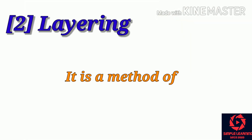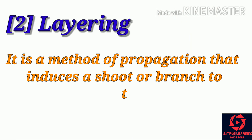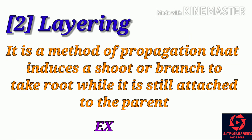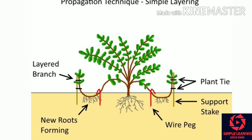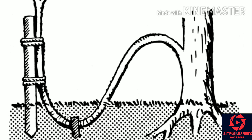Second, layering. It is a method of propagation that induces a shoot or branch to take root while it is still attached to the parent plant. Plants like mango, citrus, apple, and rose use this method. If you see the picture, the rootstock should be in the underlying soil and within a few days, that plant should develop roots and look like the parent plant.